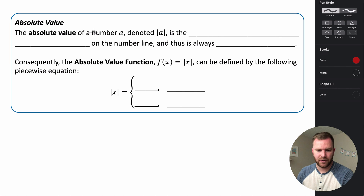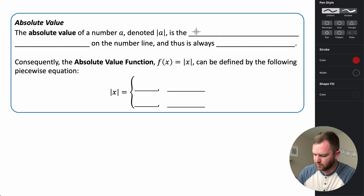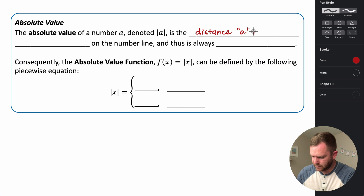The absolute value of a number A, denoted with A inside vertical bars, represents the distance that A is from zero on the number line.